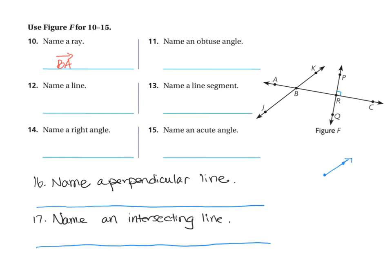The next question says name an obtuse angle. Obtuse angles are angles greater than right angles — they have a degree of 91 degrees up to 179 degrees. If I'm looking at the figure, I see a lot of different angles. There are eight different angles in this figure. I only need to name one that is obtuse — one that is greater than a right angle but less than a straight angle.